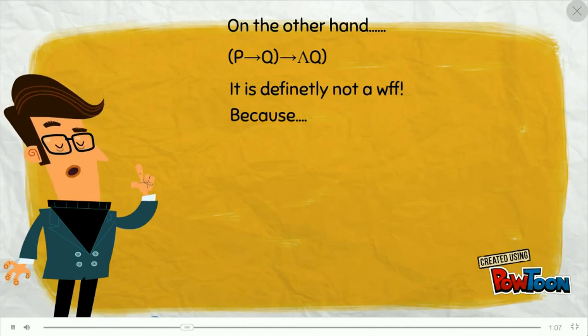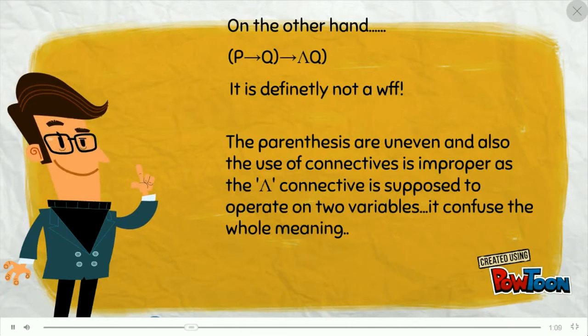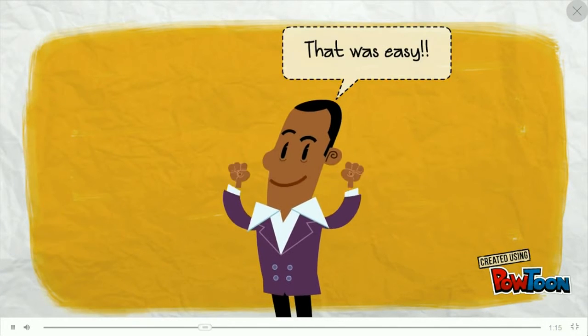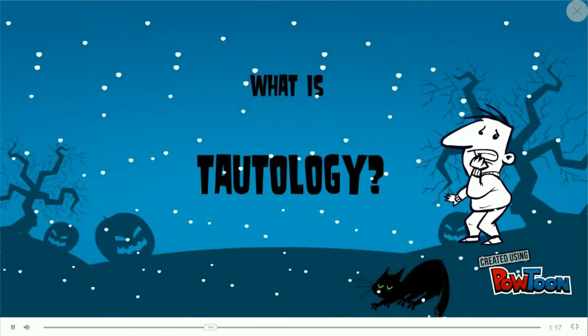On the other hand, this is not a well-formed formula because AND connective is supposed to be used among two variables. That was easy. What is tautology?